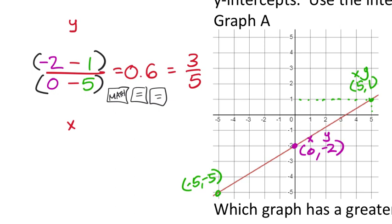You could also use the stair-step method. Starting from (negative 5, negative 5) coming up to (0, -2)—it's like driving on streets. Going up 3 boxes gives a rise of positive 3. Then going to the right 5 boxes gives a run of positive 5. So slope is 3 over 5, which matches the three-fifths we calculated.